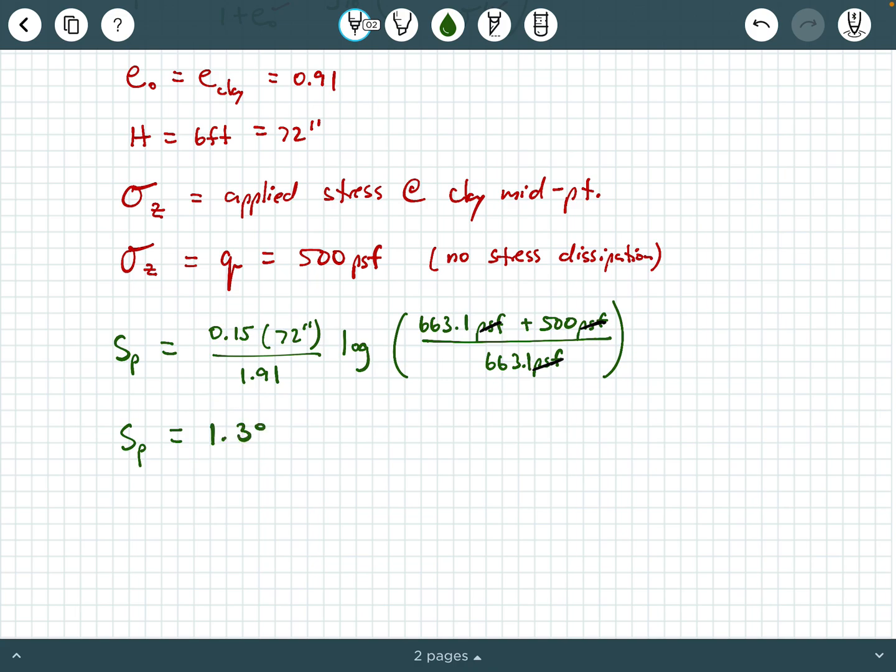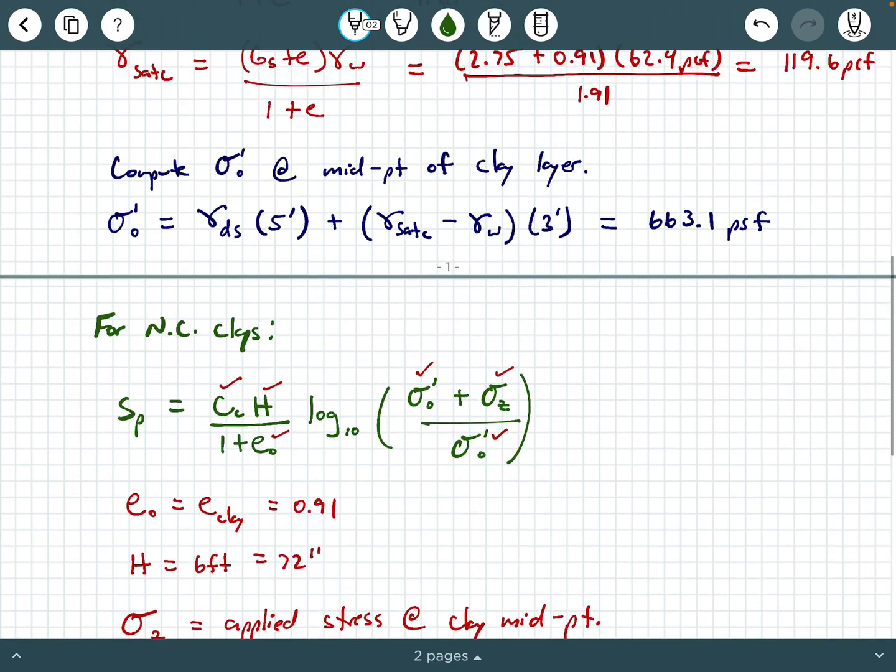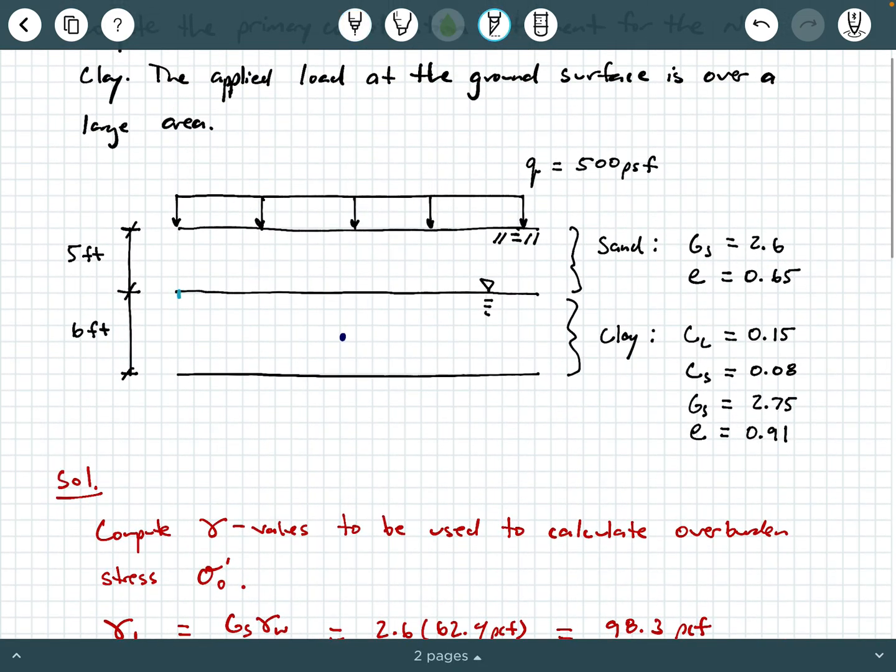And I get 1.38 inches as my consolidation settlement for the NC clay layer. And what that means is this six-foot layer will compress or settle down about 1.3 inches due to this applied load at the ground surface. And remember, the definition of primary consolidation is the settlement of a cohesive soil layer, in this case clay, due to the dissipation of pore pressure. So when this applied load is acting at the ground surface, it's going to compress this clay layer and it's going to squeeze out the water in the void space here. And that's going to cause a volume change in the clay layer, which is reflected as a vertical settlement because, again, we're performing one-dimensional consolidation calculations here.